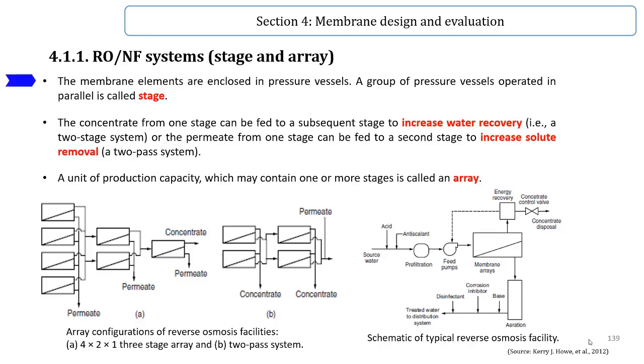The membrane elements are enclosed in pressure vessels. Reverse osmosis systems can contain one to several groups of pressure vessels. Each group of pressure vessels is called a stage.